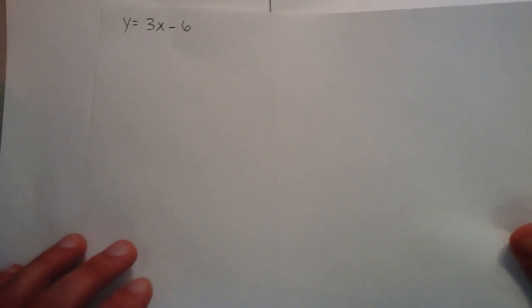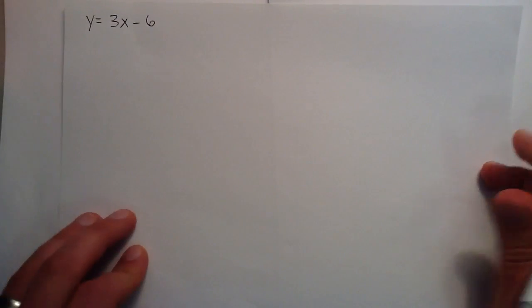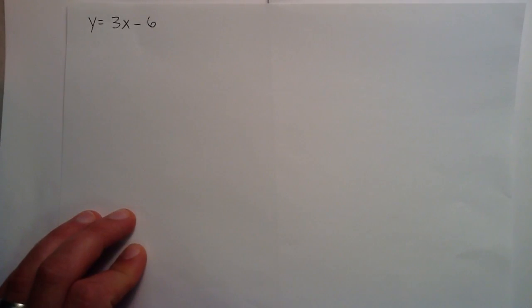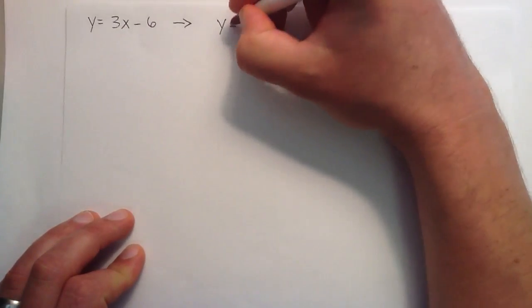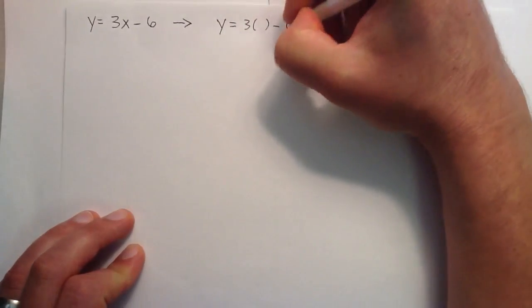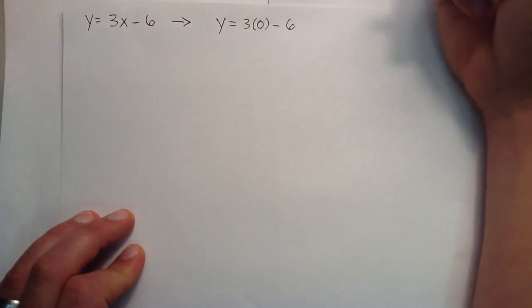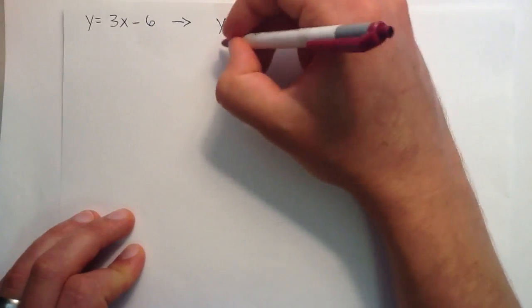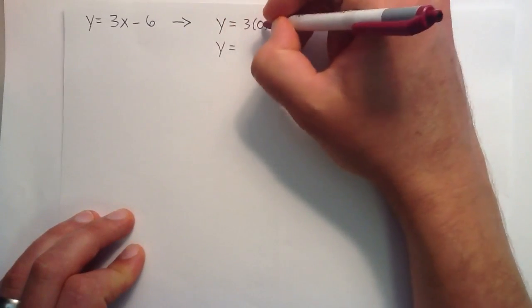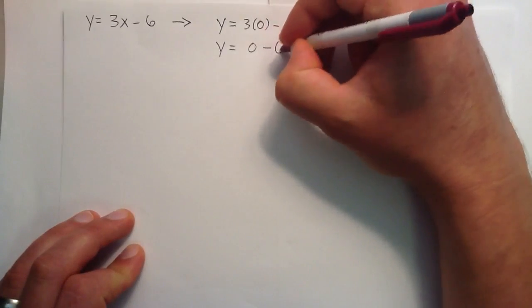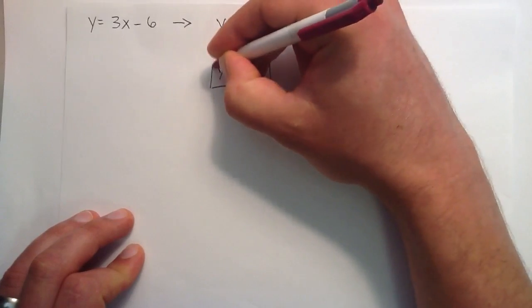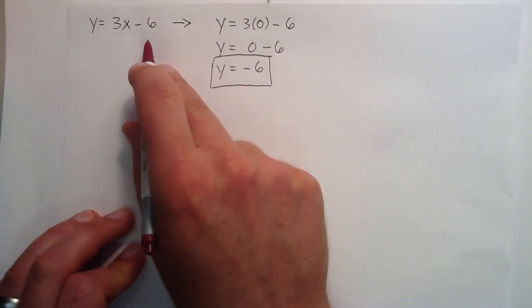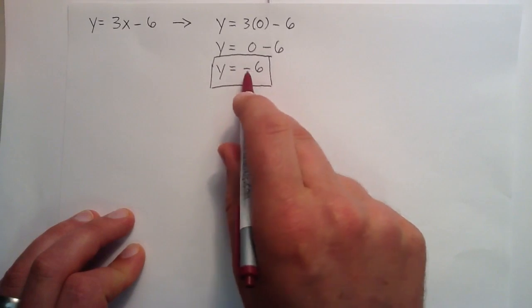Let's start with the line y equals 3x minus 6. The first thing we're going to do is find out where this line crosses the y axis. We just set x equals 0. So we rewrite y equals 3x minus 6, but we put 0 in for x. Now we just solve this: y equals 3 times 0, which is 0, minus 6. So y equals negative 6. Just like that, we found where this line crosses the y axis — it crosses at negative 6.